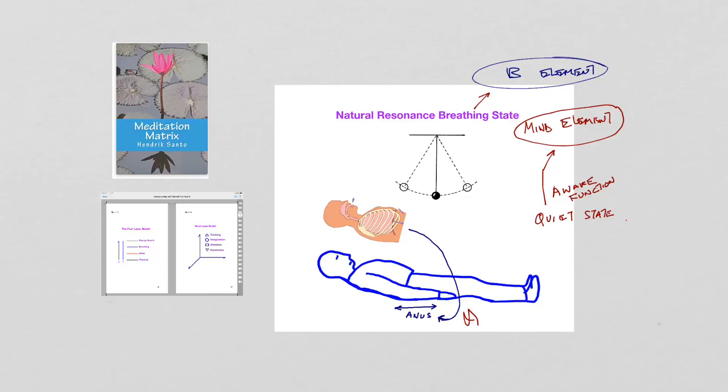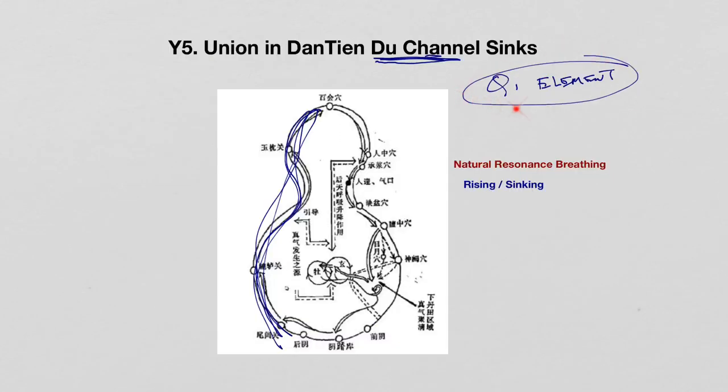In order to implement this qi element here, which is Y5, Union in DanTian, Du Channel Sinks,